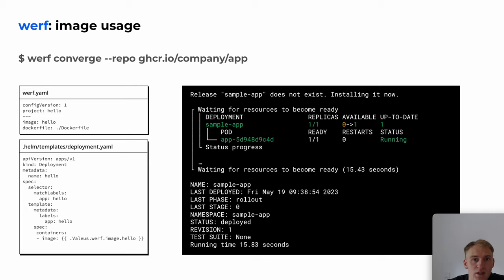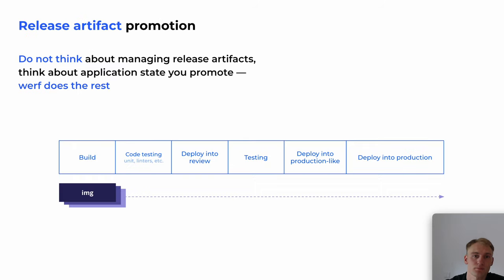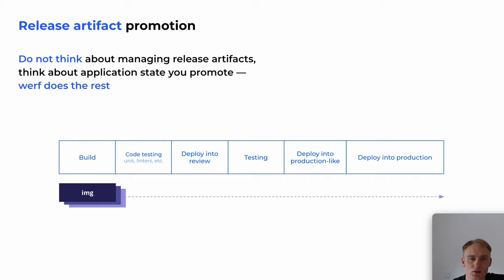This is how it works. In both examples, the user does not work with tags directly. We propose to pass release artifacts through all steps and delivery environments. In such a scenario, the user does not need to think about tagging and, in general, about what is stored in the container registry.